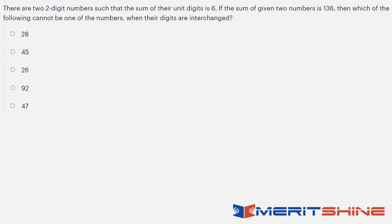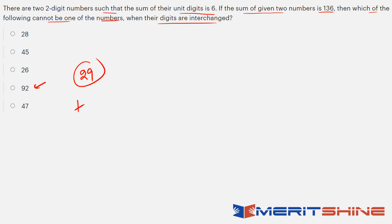The next question involves two two-digit numbers where the sum of unit digits is 6 and the sum of the numbers is 136. Which of the following cannot be one of the numbers when their digits are interchanged? Looking at option 92: reversed it gives 29. Since 29 added to any two-digit number cannot give 136 — the difference would be over 100 — 92 cannot be one of the original numbers. This is solved purely by observation in seconds.